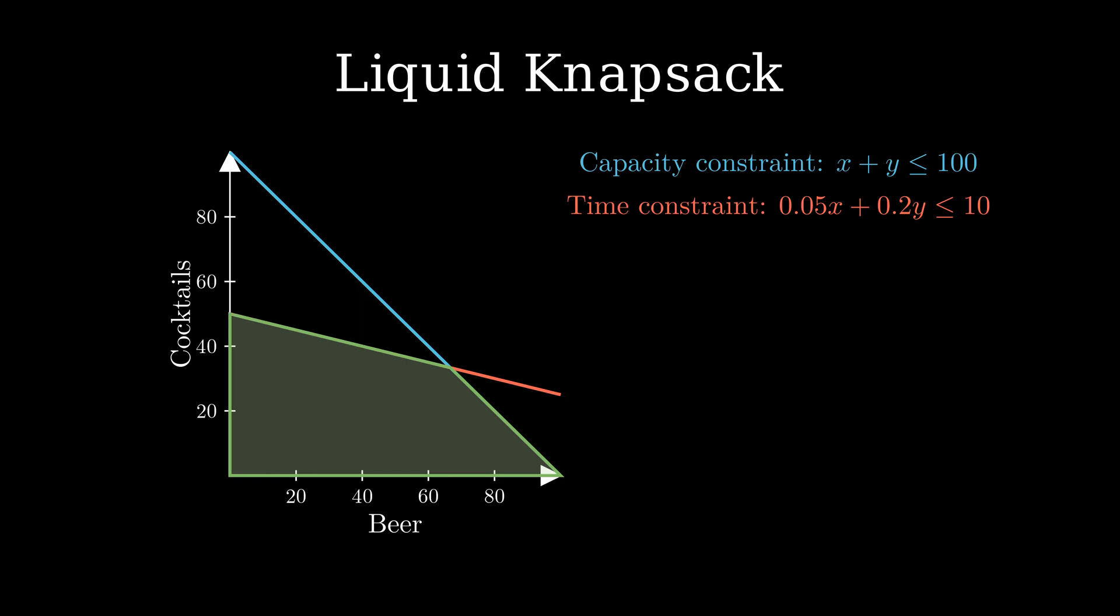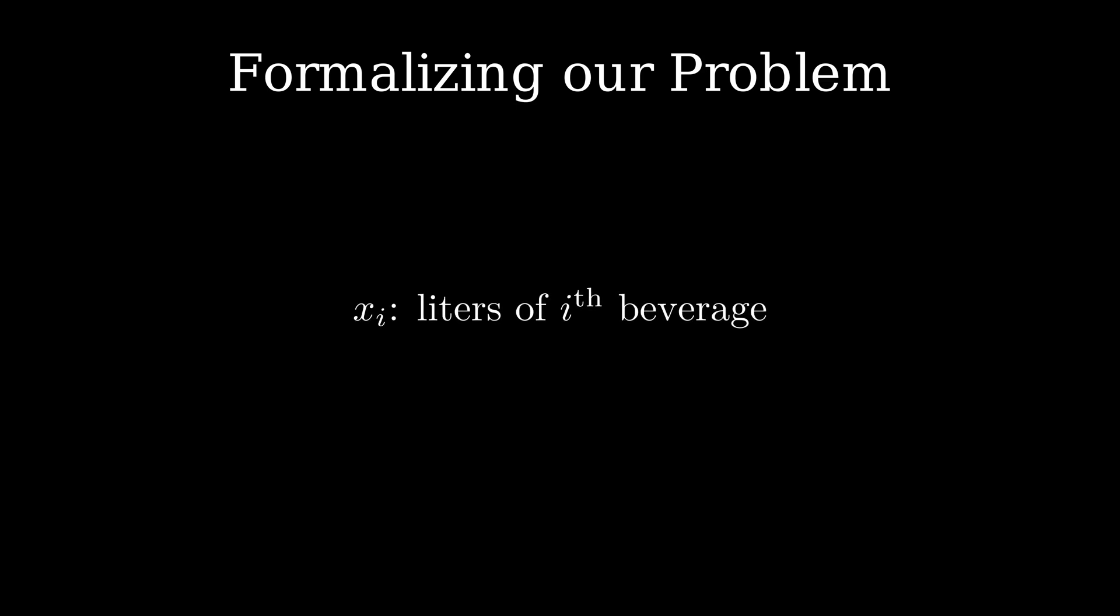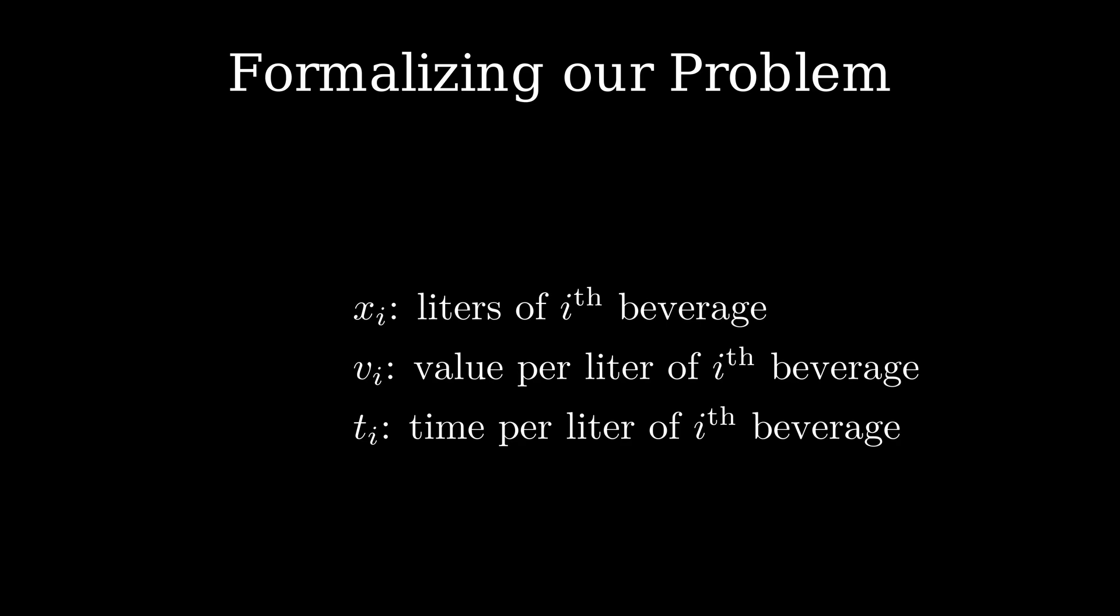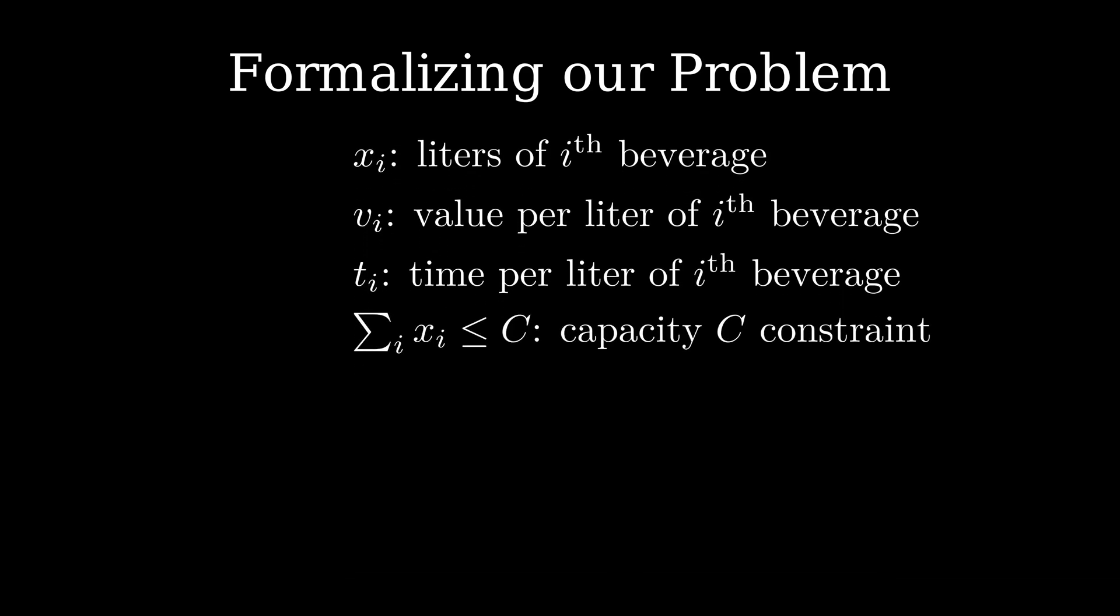Let us take a step back and try to express our problem a bit more formally. Let x_i be the amount of liters we produce for beverage i. Recall that each beverage needs a time t_i to prepare and has a value v_i. This allows us to express the time and capacity constraints as inequalities. The sum of the liters we produce for each beverage must be less than the capacity of the fridge. Similarly, the sum of the liters of each beverage multiplied with its preparation time must be less than the available time. Moreover, we can also formulate our objective to maximize the total produced value this way. The total value is equal to the sum of the liters of each beverage multiplied with its value.